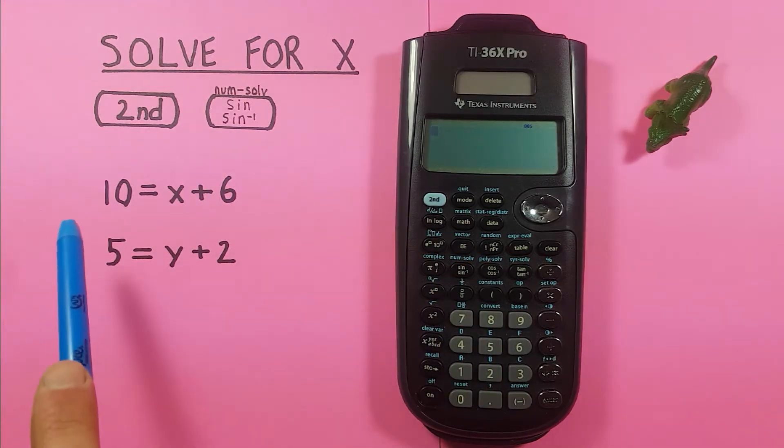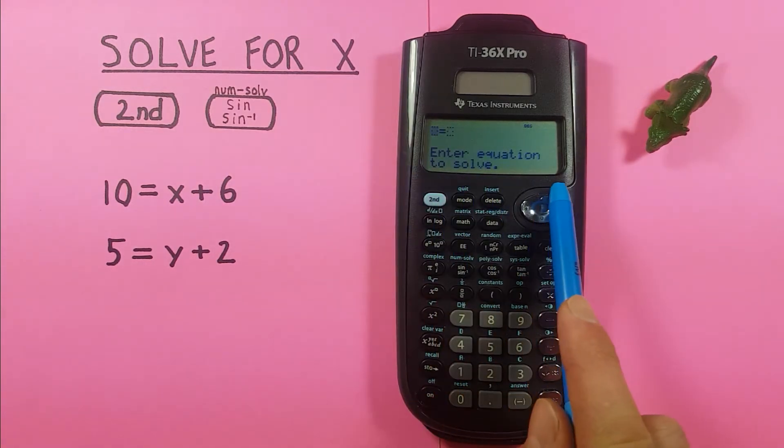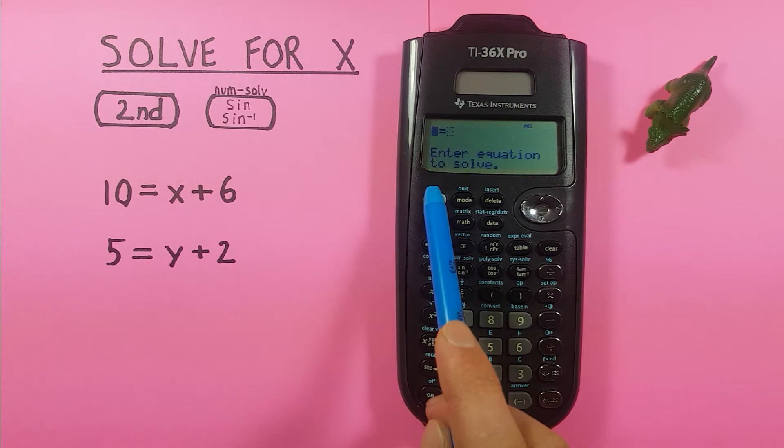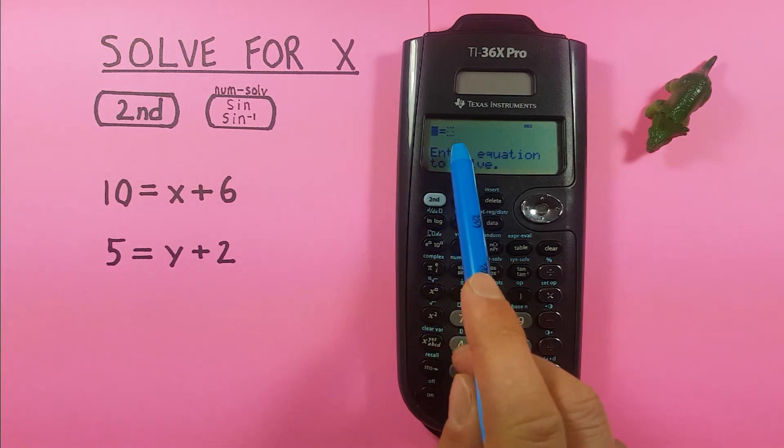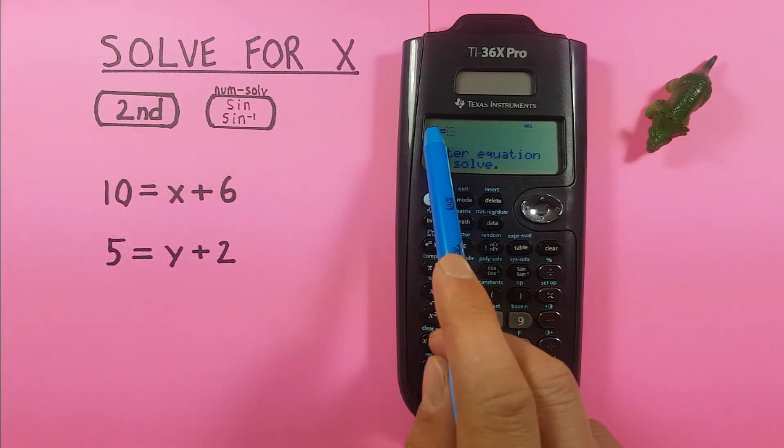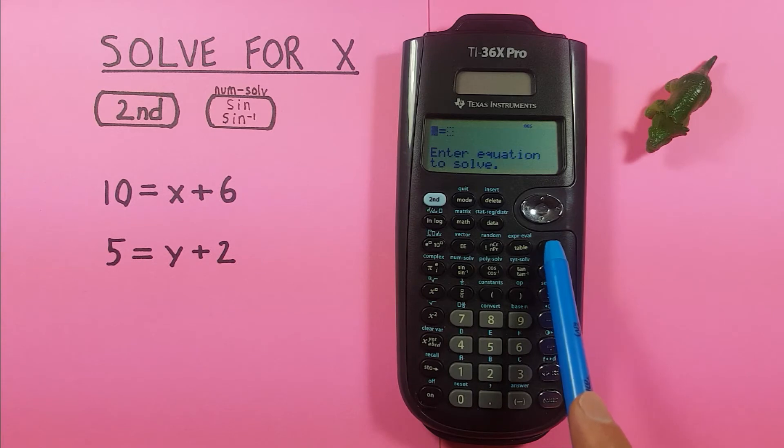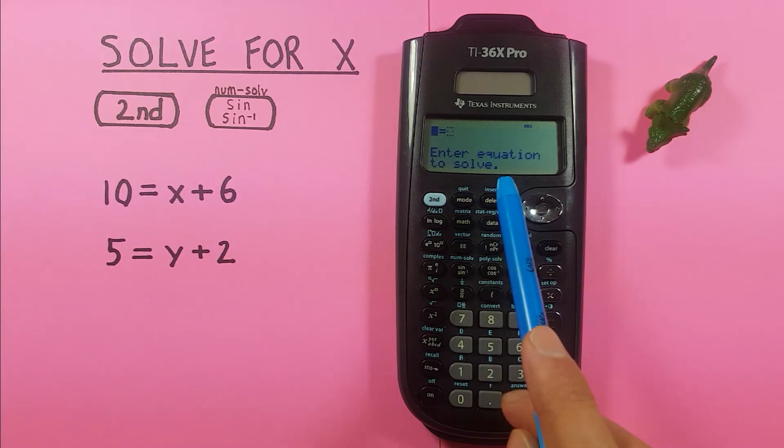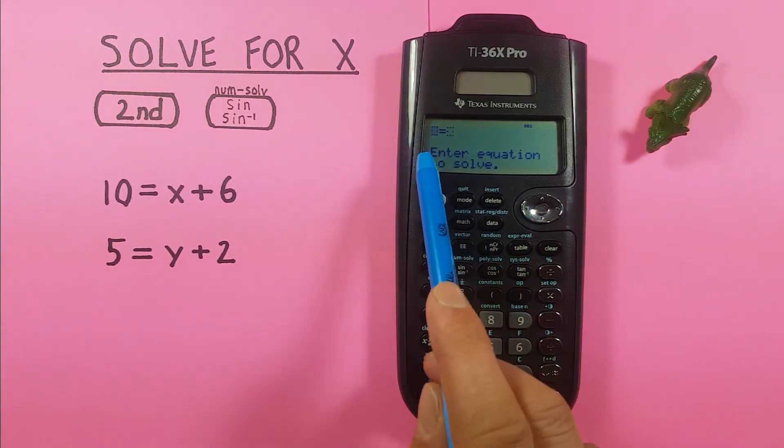Alright, let's say we want to solve for a variable like the x in this equation here. To do that we press second sine and that will bring us to this screen here. If you've used this function in the past you might see an equation here, that's okay, if you do just highlight each piece and press the clear key. Now we need to fill in these boxes.